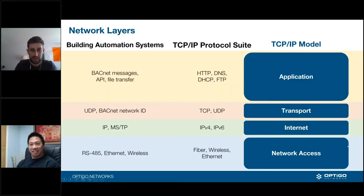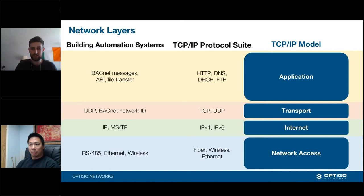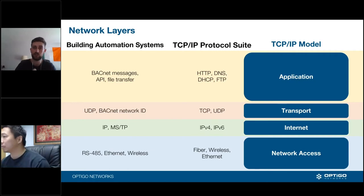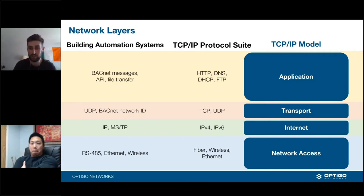If you've been following this series of webinars, you know we've made our way up through the layers of the TCP/IP model. We started with network access, talking about different connections like SFPs and different wires. Then we covered IPv4 addressing, subnetting, and then TCP and UDP — the two different ways of establishing a connection or sending information.